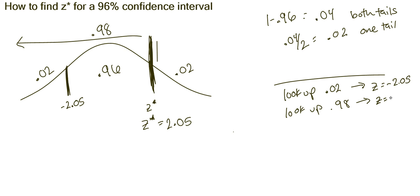So we get z equals 2.05. And again, for confidence intervals, we always go with the positive result.